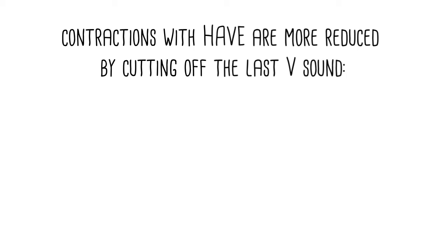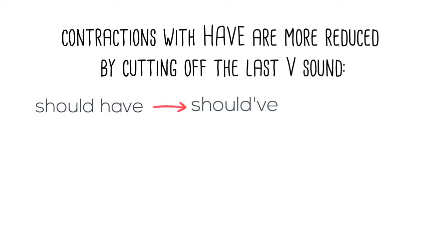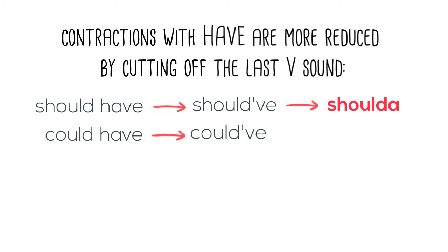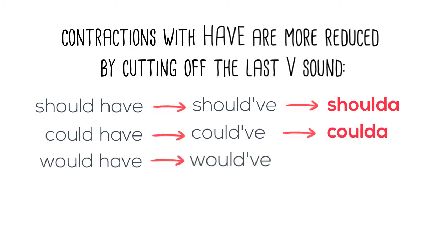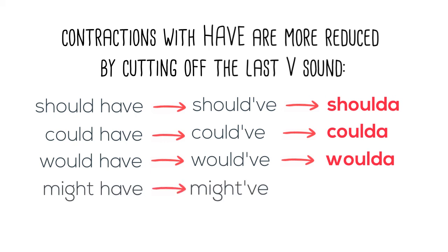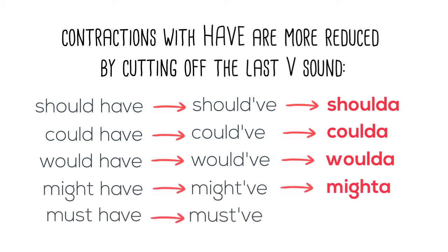Contractions with 'have' are more reduced by cutting off the last V sound. Should've becomes shoulda. Could've becomes coulda. Would've becomes woulda. Might've becomes mighta. Must've becomes musta.